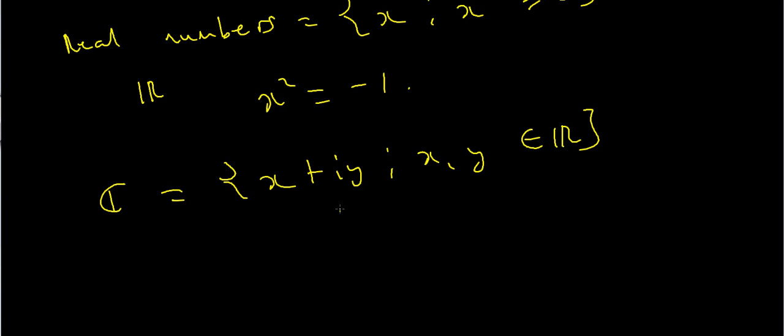So what is this i symbol? So this i symbol is defined as i squared equals minus 1, or if you like, i equals the square root of minus 1.